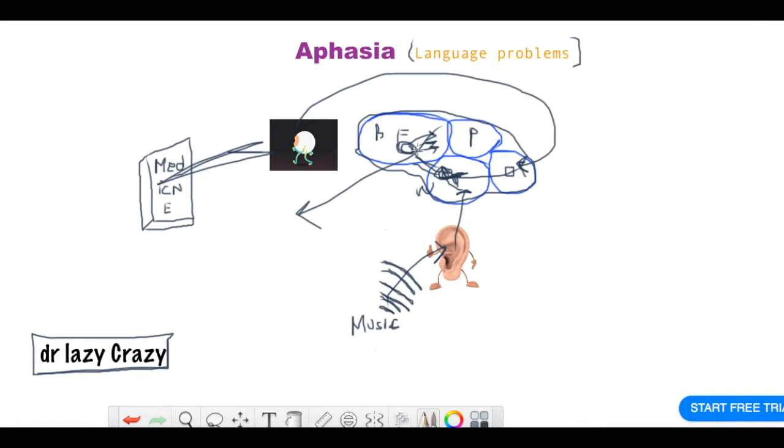That's all it is. So if your Wernicke's area is damaged, you cannot really understand what the person is saying - you cannot make a meaning of it. If your frontal area is damaged, your Broca's area, you cannot speak out the words.